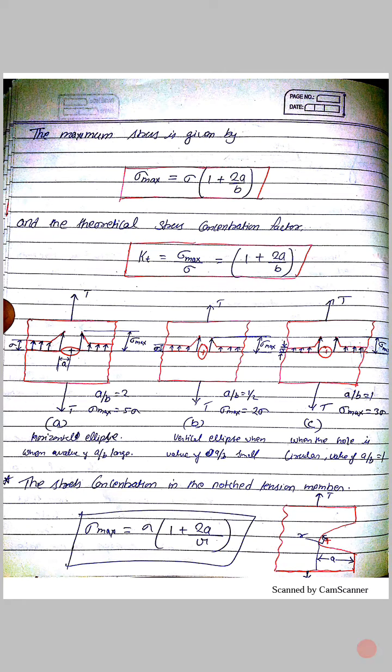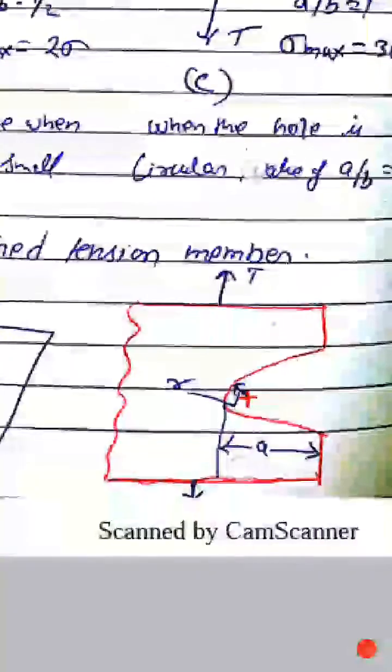The stress concentration in notches for a tension member: sigma_max = sigma (1 + 2a/r).